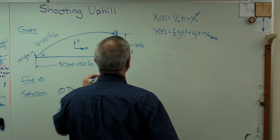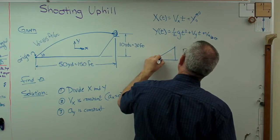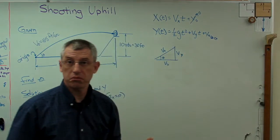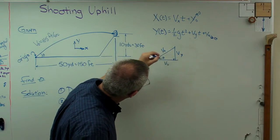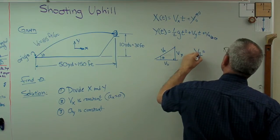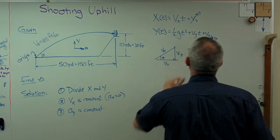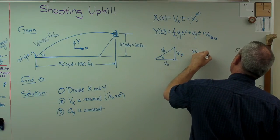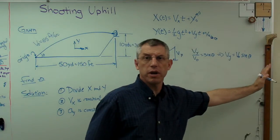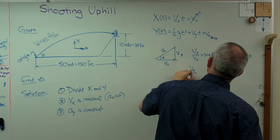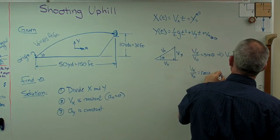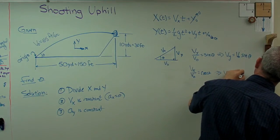What are vx and vy? Well, if theta is the launch angle and v₀ is the initial speed, then vy is the vertical component and vx is the horizontal component. Looking at the right triangle: vy over v₀ equals sine theta, so vy = v₀·sin(θ). And vx over v₀ equals cosine theta, so vx = v₀·cos(θ).